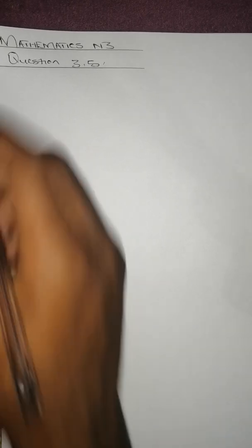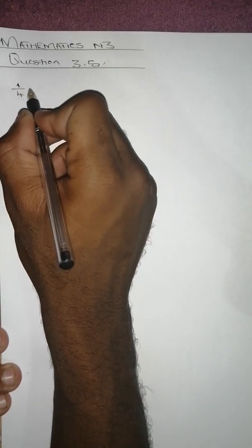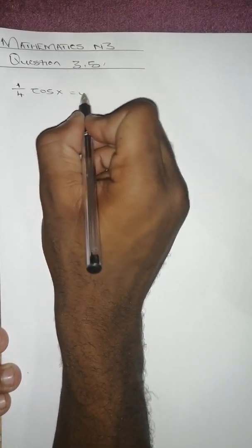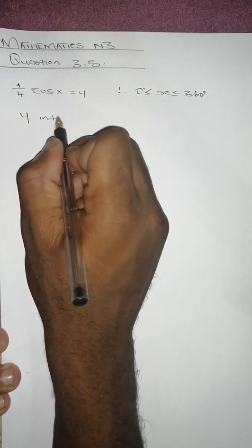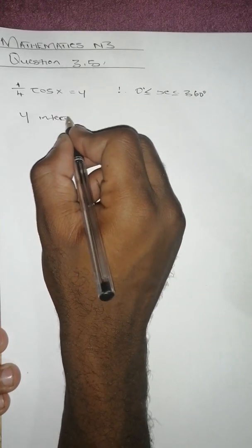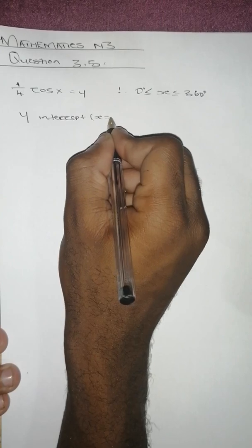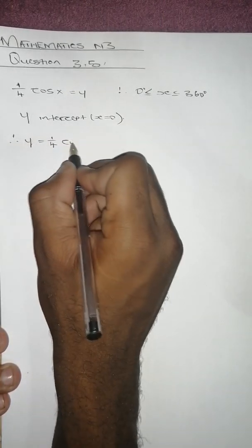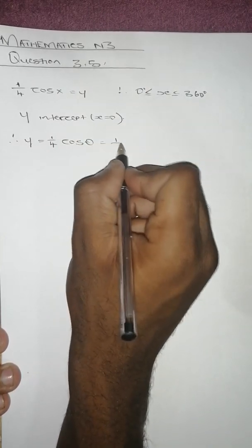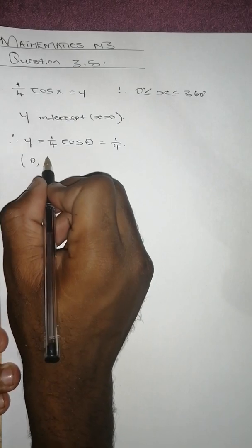For question 3.5, we draw the graph of y equals (1/4)cos x for x from 0 to 360 degrees. The first thing is to find the y-intercept. Setting x equals 0: y equals (1/4)cos 0 equals 1/4. So the y-intercept is at (0, 1/4).